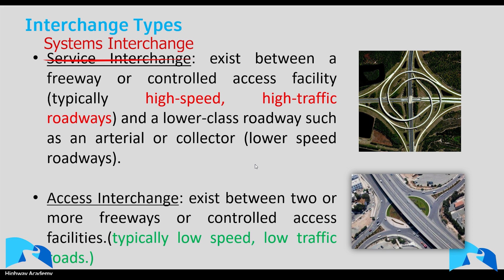There are two main interchange types. The first is a service interchange, which connects a freeway or high-speed road to another lower-class road. This lower-class road can be lower or higher speed, but from experience, service interchanges are normally located between two expressways or two high-speed, high-traffic roads.